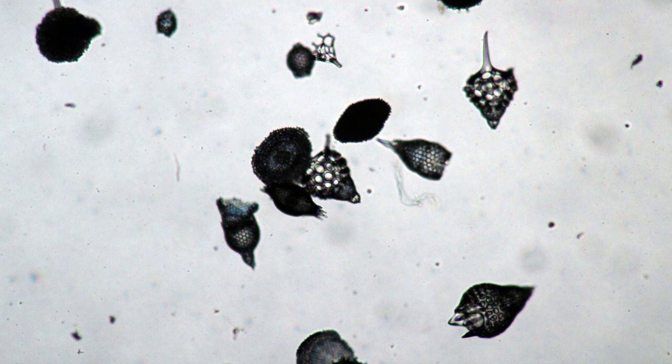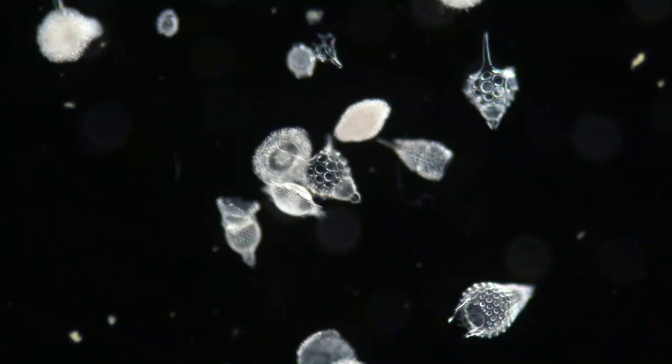So this picture here shows some radiolarians in regular bright field and you can see that the image, the radiolarians are dark on a bright background. And when you put in the patch stop filter, the dark field filter, then you can see that the radiolarians they start to light up on a dark background.